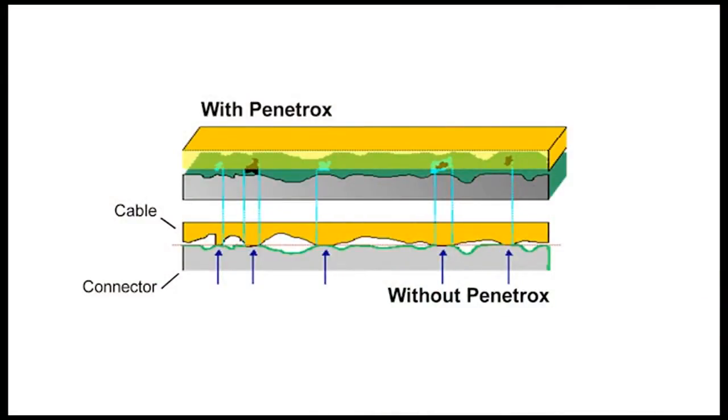This is what you would see if we had the connection cross section under a microscope. You can see that not everything is perfectly matched up for contact points. But now we put the penetrox in there. That fills in all these little gaps. That's what you're gaining by having that penetrox E in every type of compression ground connector.